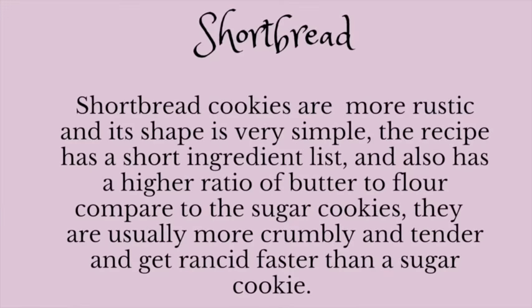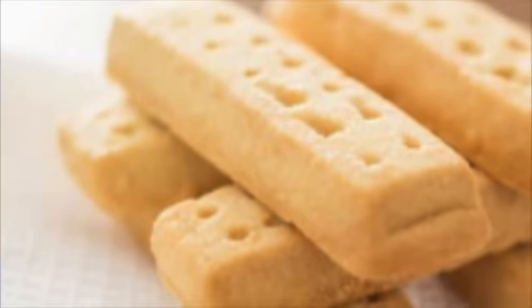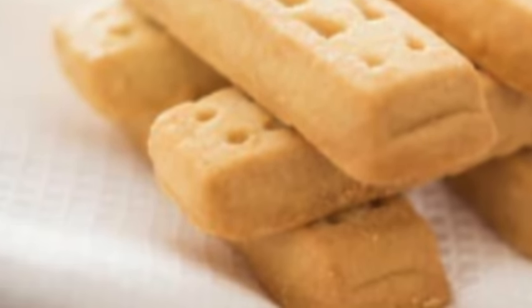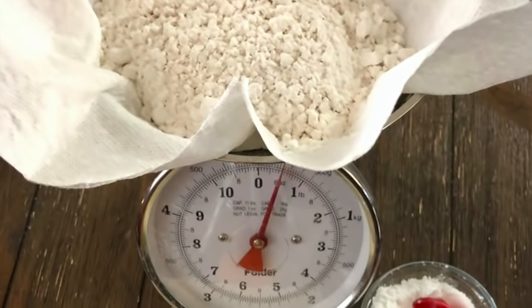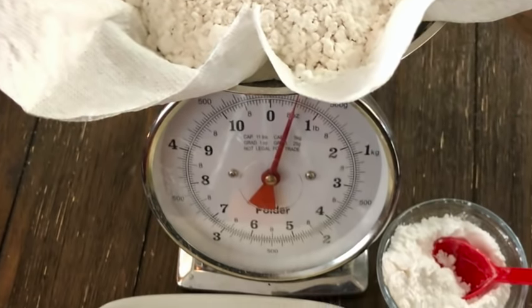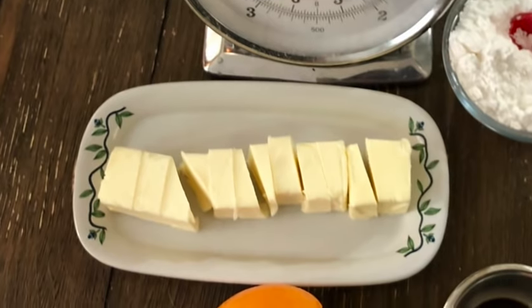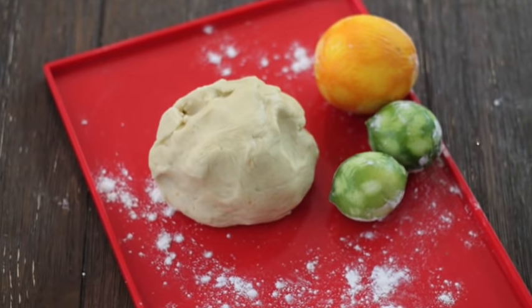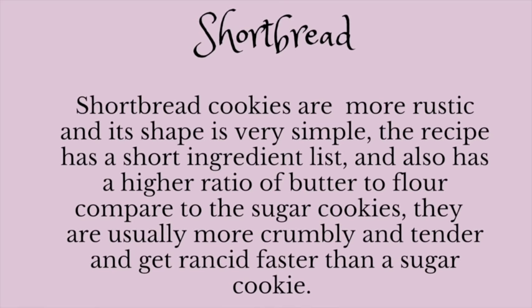On the other hand, shortbread cookies are more rustic and their shape is very simple, like rectangles and circles. The recipe has a short ingredient list, they don't have any leavening agent, and they also have a higher ratio of butter to flour compared to sugar cookies. They are usually more crumbly and tender and get rancid faster than the sugar cookie.